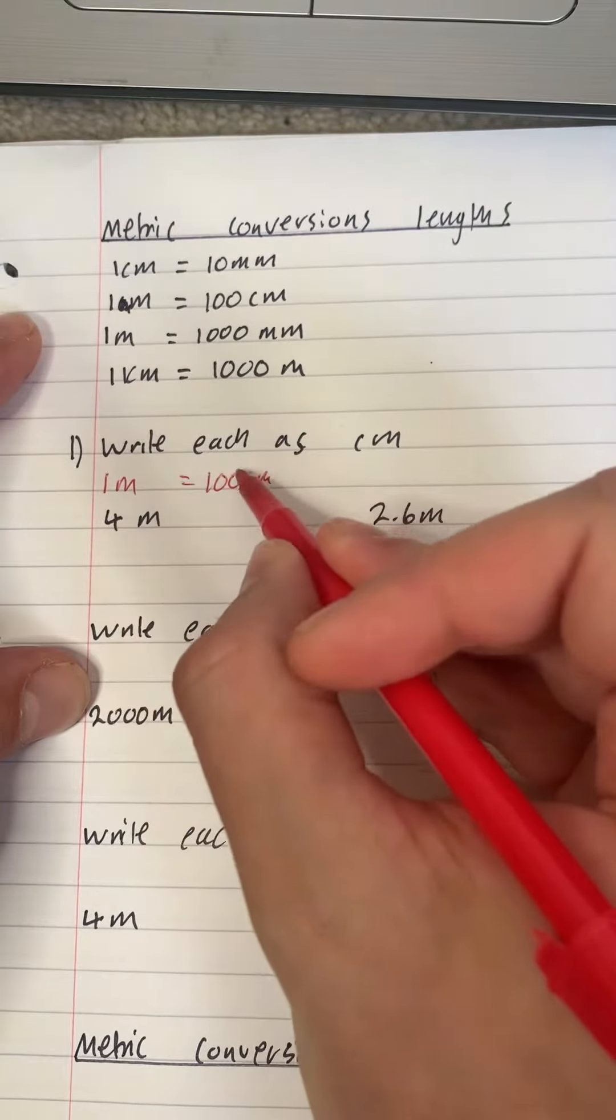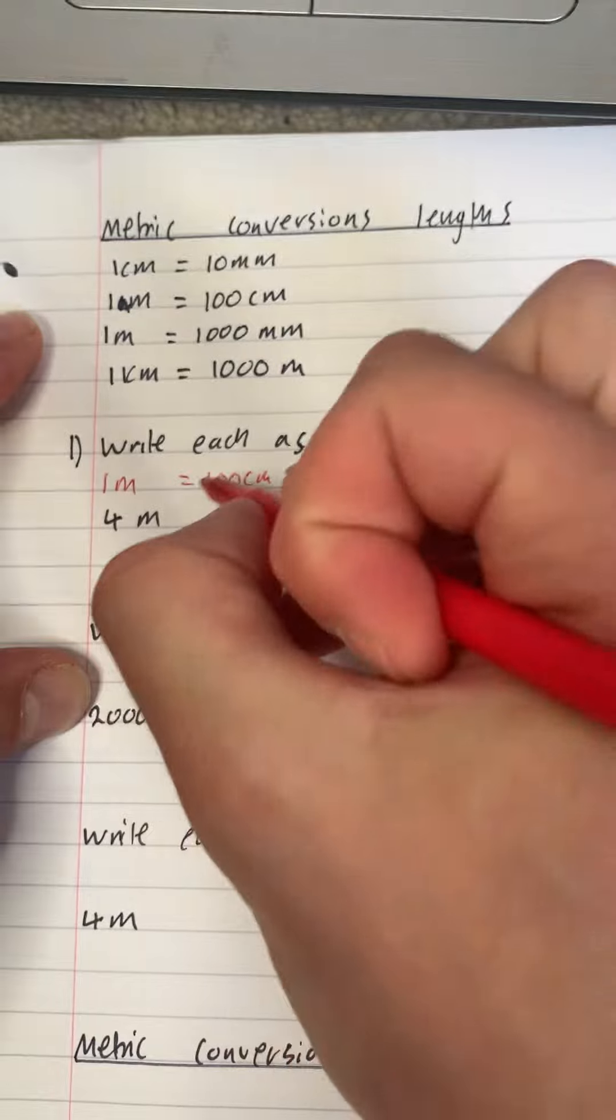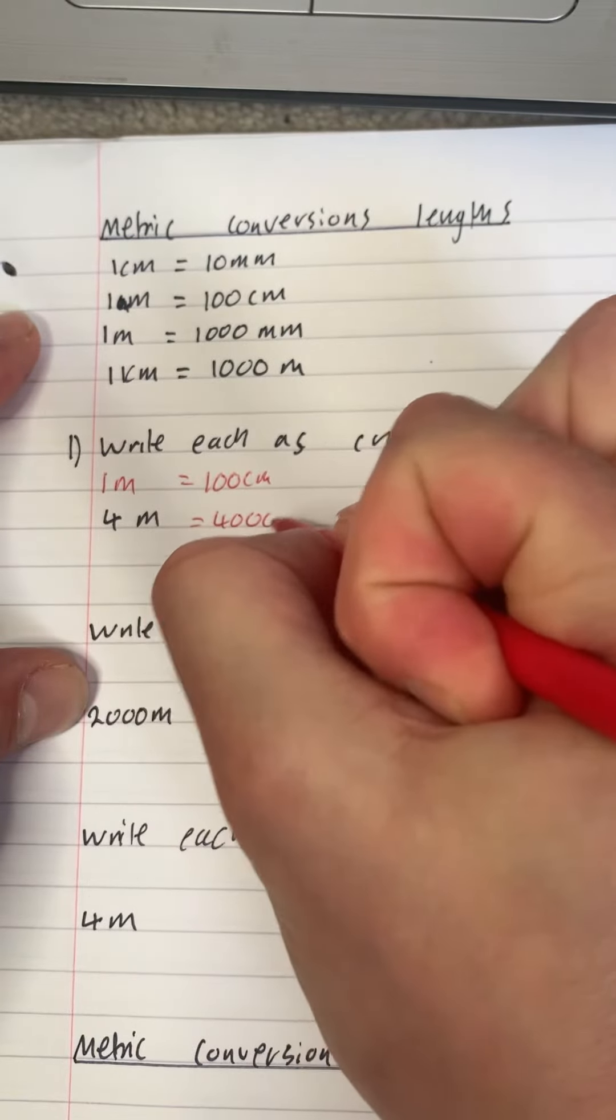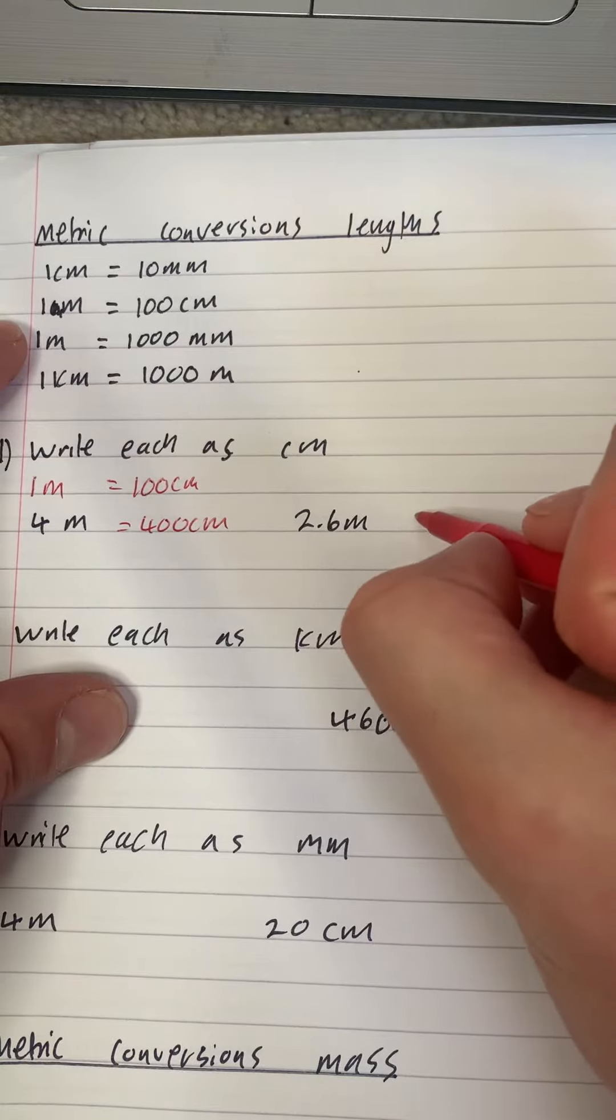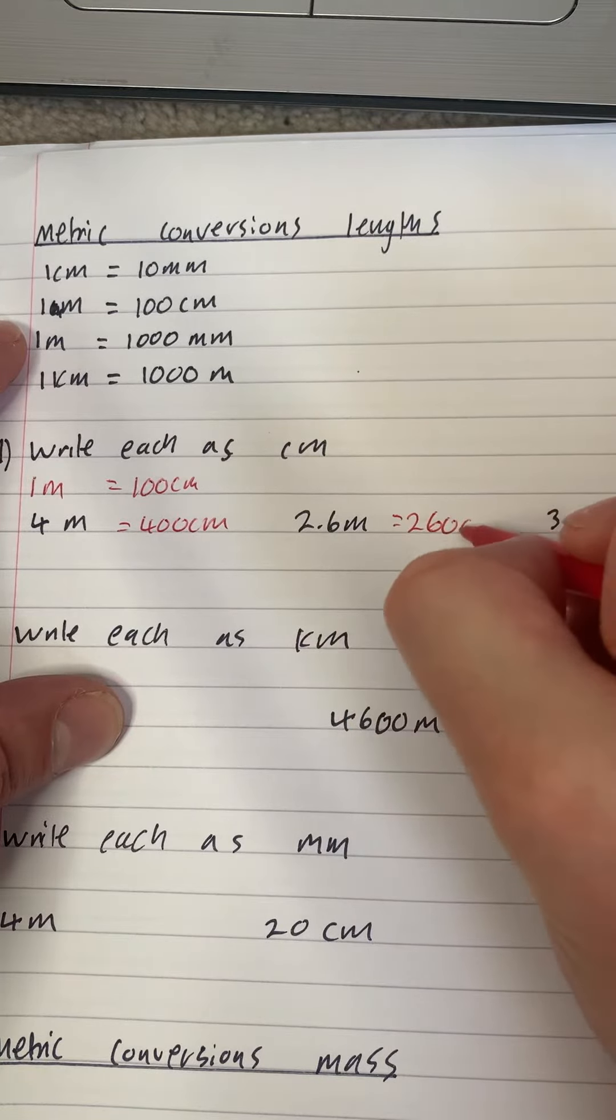So to get from here to here, we have to times by 100. So I times this by 100, which is 400 centimeters. This is the same, we times by 100, which will give 260 centimeters.